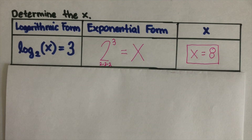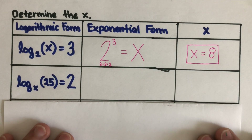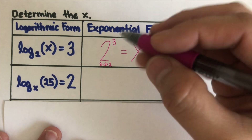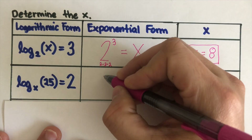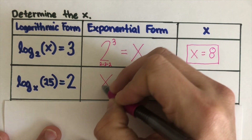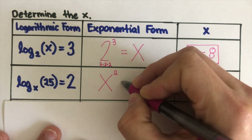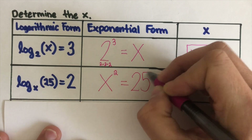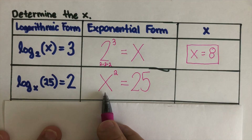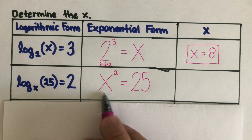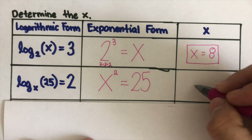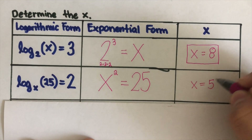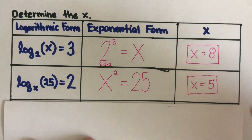Let's move on to the next example. We solve for x again. If we set this up to its exponential form, this would be x to the power 2 is equal to 25. So what number, when squared, gives 25? x is 5, because 5 squared is 25.